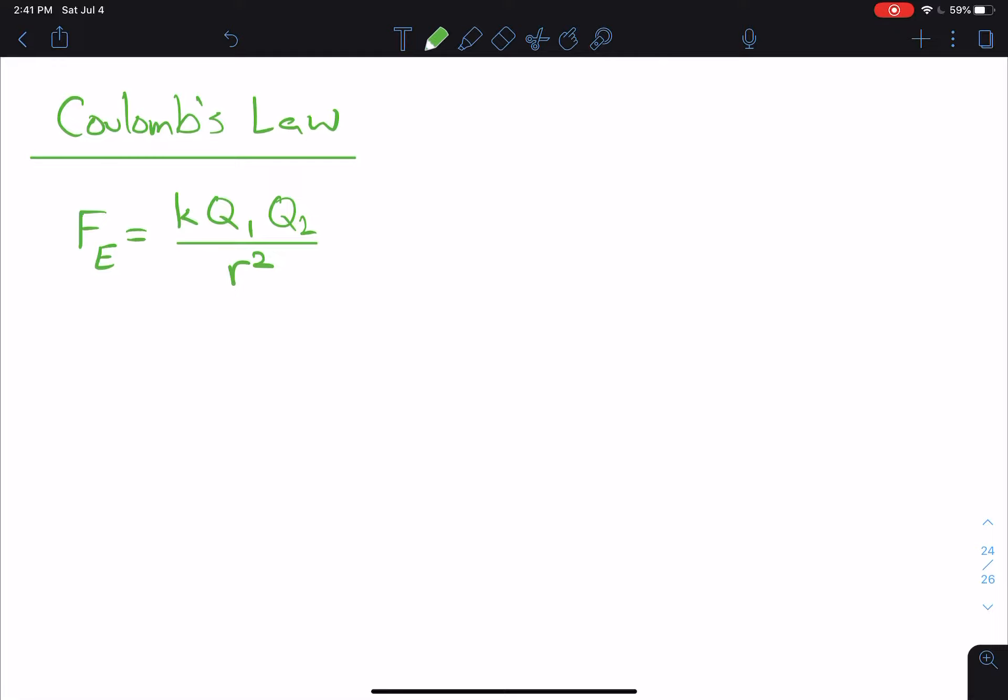Now, this is the computational part of Coulomb's Law. It's the formula. Notice, though, that it's for the magnitude of the electrostatic force.